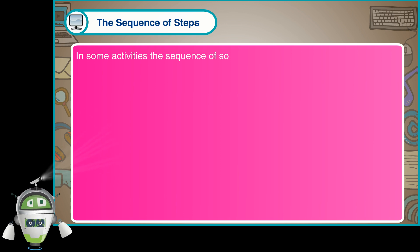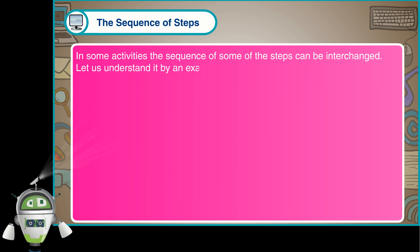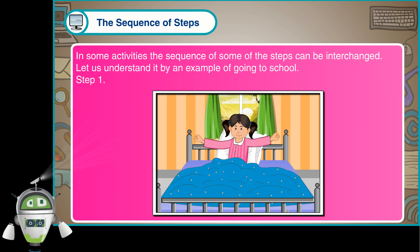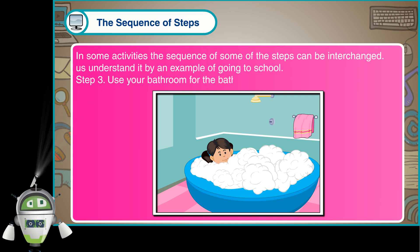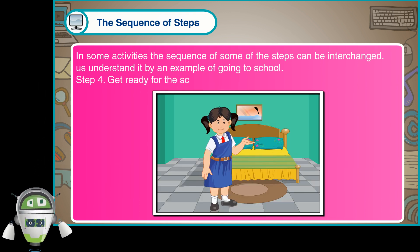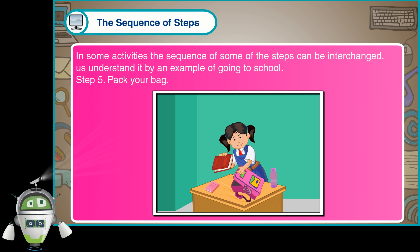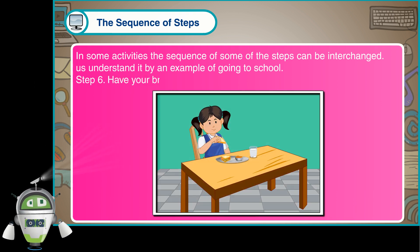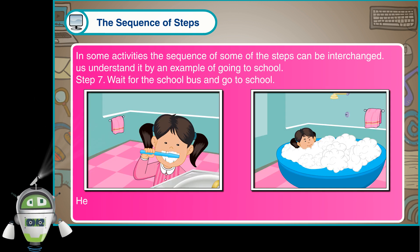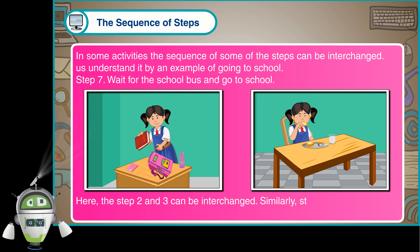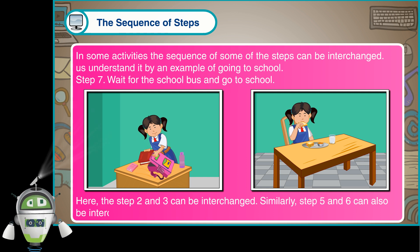In some activities, the sequence of some of the steps can be interchanged. Let us understand it by an example of going to school. Step 1 - Get up early in the morning. Step 2 - Brush your teeth. Step 3 - Use your bathroom for bathing. Step 4 - Get ready for school. Step 5 - Pack your bag. Step 6 - Have your breakfast. Step 7 - Wait for the school bus and go to school. Here, step 2 and 3 can be interchanged. Similarly, step 5 and 6 can also be interchanged.